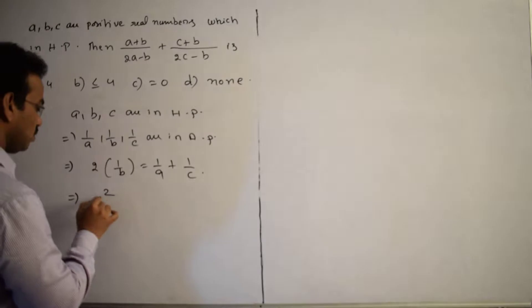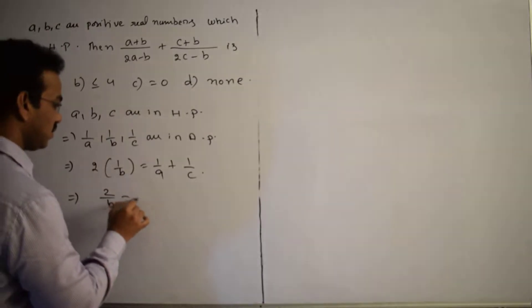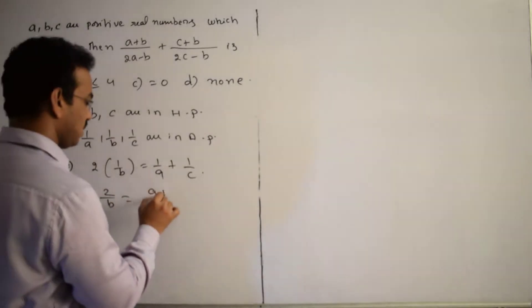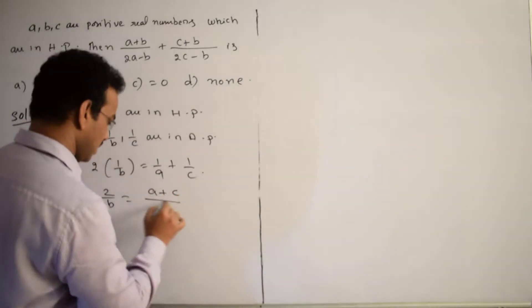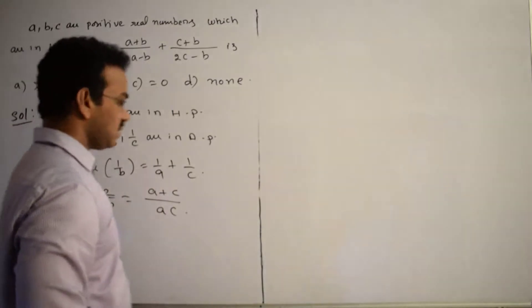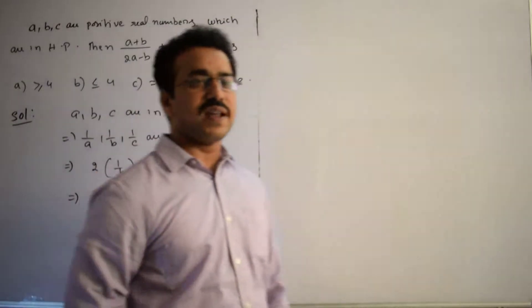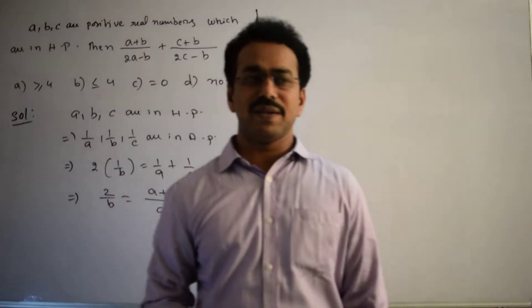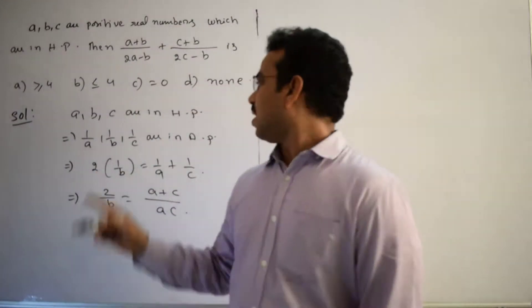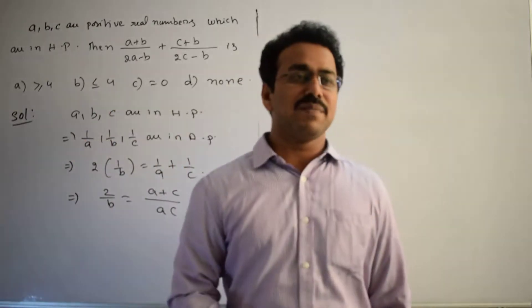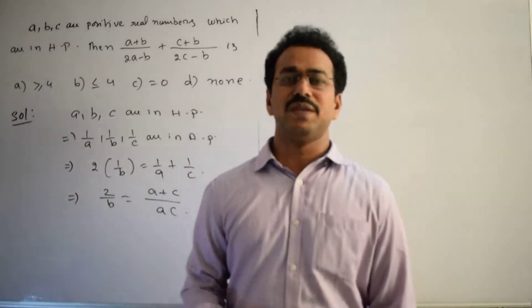This implies 2/B equals (A + C)/(AC). This is the final result when 1/A, 1/B, 1/C are in arithmetic progression. But since A, B, C are in HP, we take the reciprocal of this result.